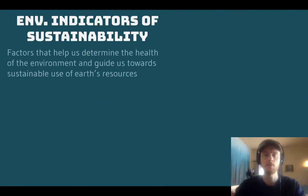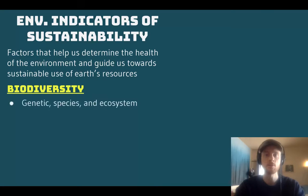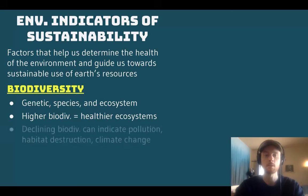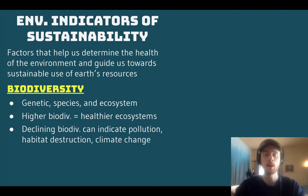An environmental indicator is something that we use to assess the health of ecosystems and to assess whether or not we're living sustainably. The first one is biodiversity, which refers to genetic, species, and ecosystem biodiversity. Higher biodiversity is indicative of a healthier ecosystem. Genetic diversity makes populations more resilient and resistant to disruption. Species diversity gives more roles to an ecosystem and makes a more complex and interconnected food web. Ecosystem biodiversity provides a wide array of habitats for organisms. Declining biodiversity can indicate pollution, habitat destruction, and climate change — meaning our actions on Earth are not sustainable.